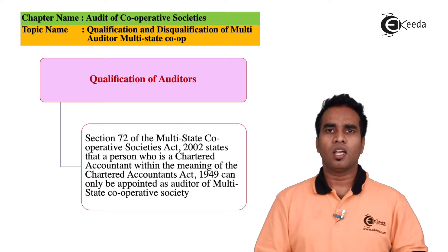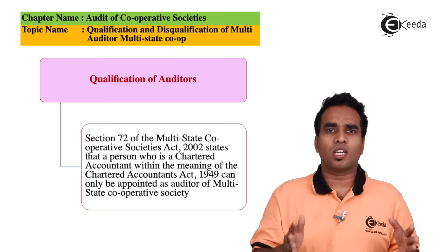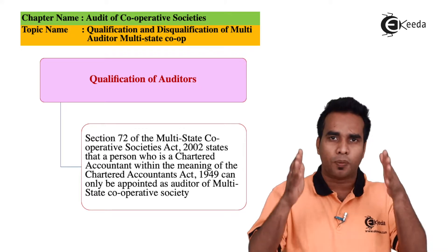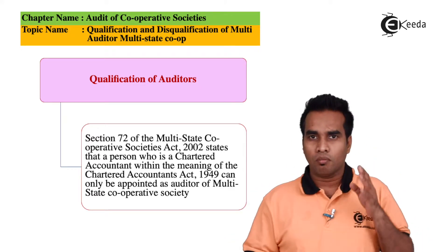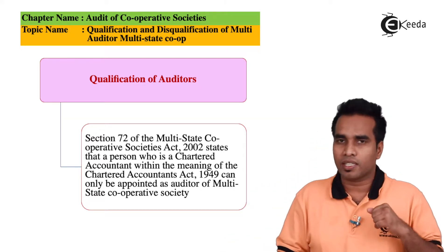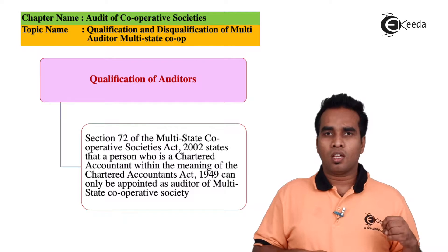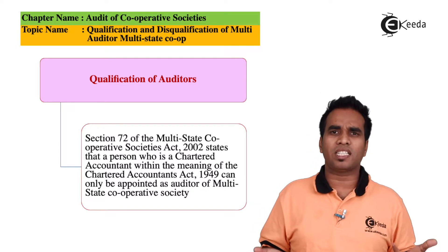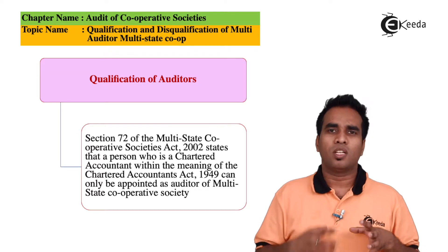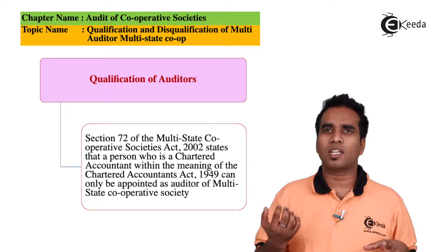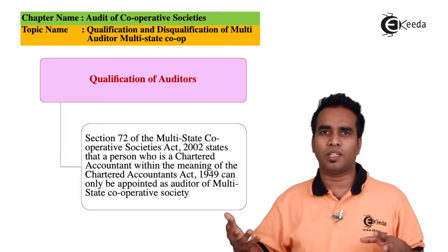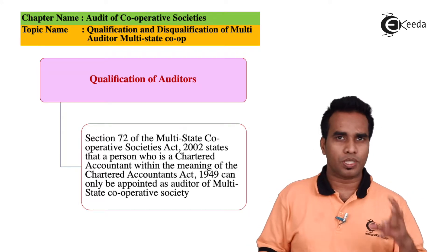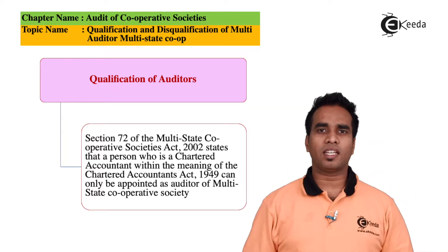We are talking about qualifications and disqualifications of Multi-State Cooperative Society Audit. A cooperative society that has branches and business across different states is called a Multi-State Cooperative Society.